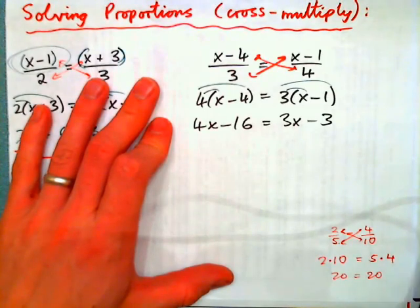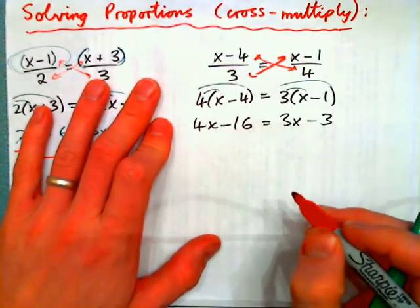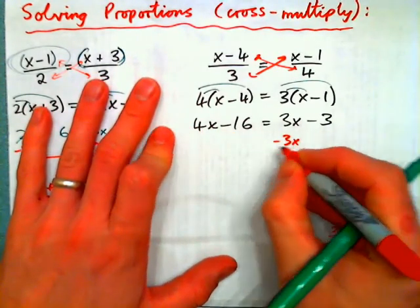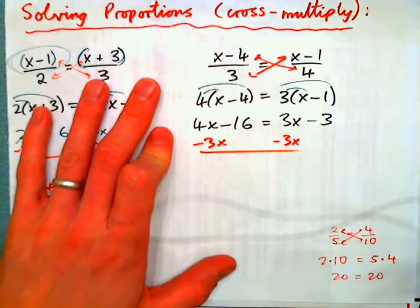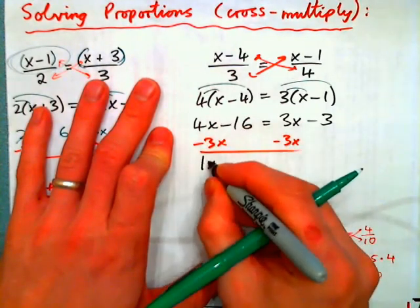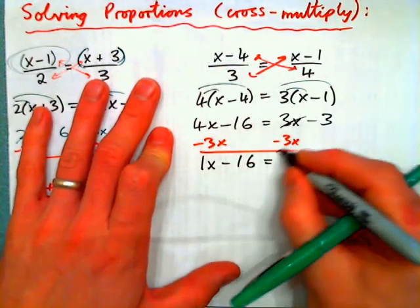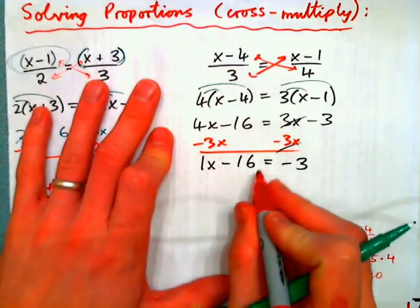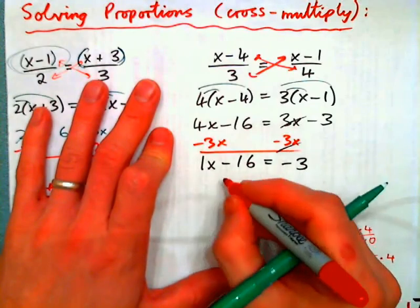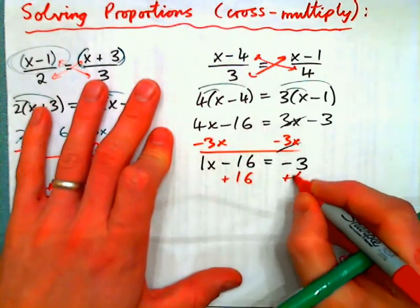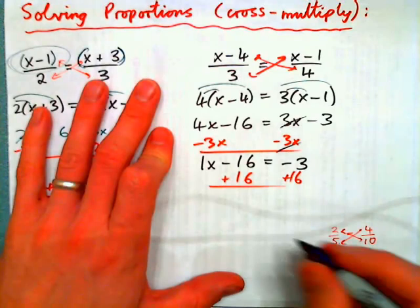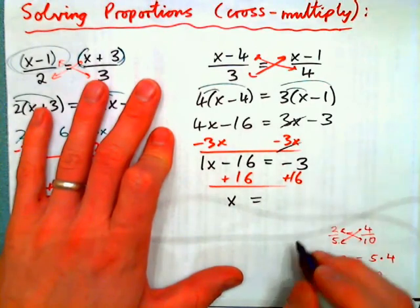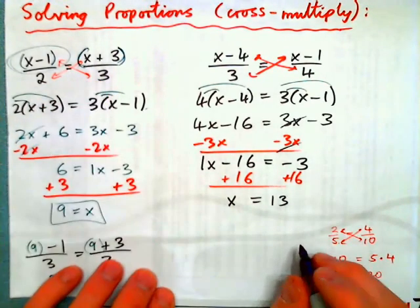Now we get x by itself. And again, my instinct is to work on the x's first. Remember, x's are different terms than the units. I could subtract 3x from both sides because then I would be left with 4x minus 3x is 1x minus 16 equals negative 3. Now we get the x by itself. 16 is being subtracted. So the inverse to that is add 16 to both sides. And we get x equals negative 3 plus 16. 3 negatives and 16 positives is 13 positives. And that's the correct answer.